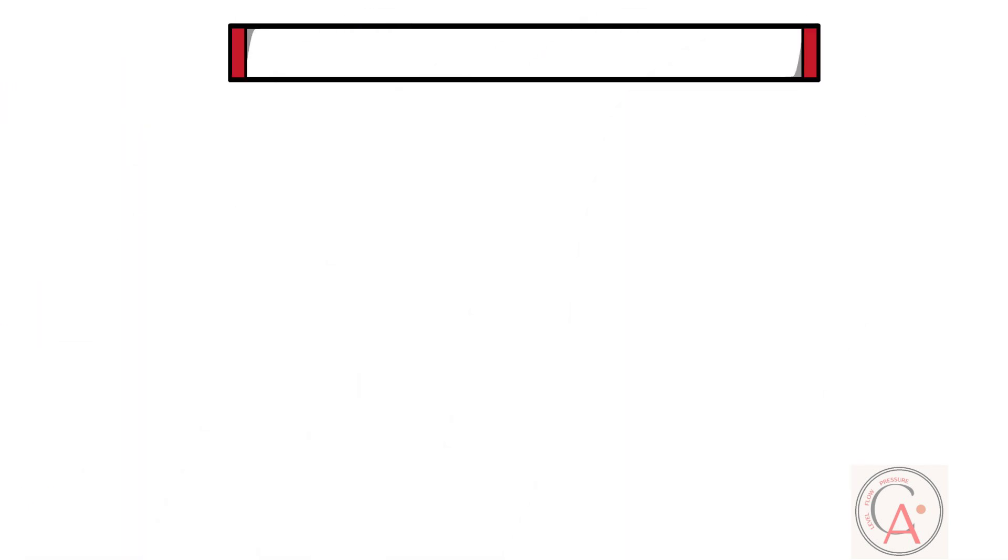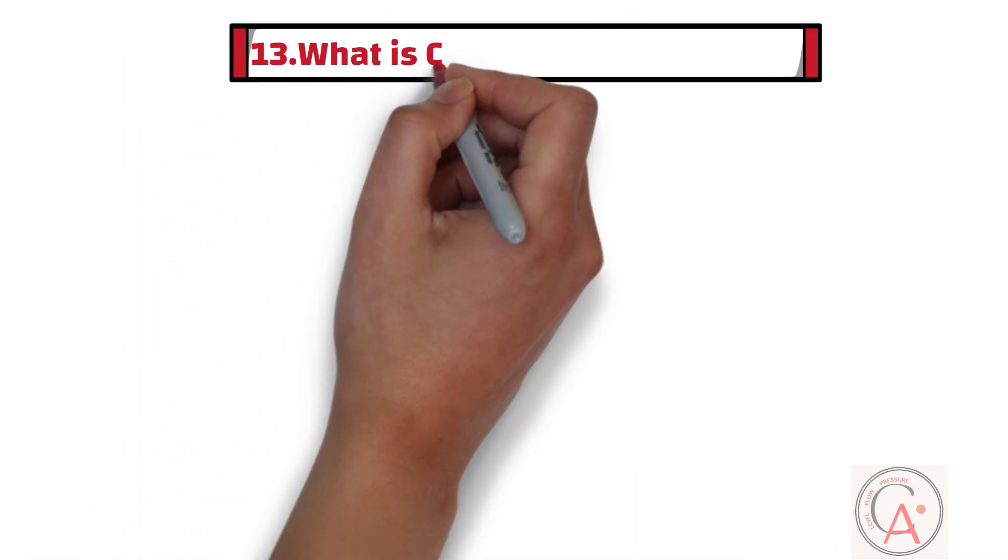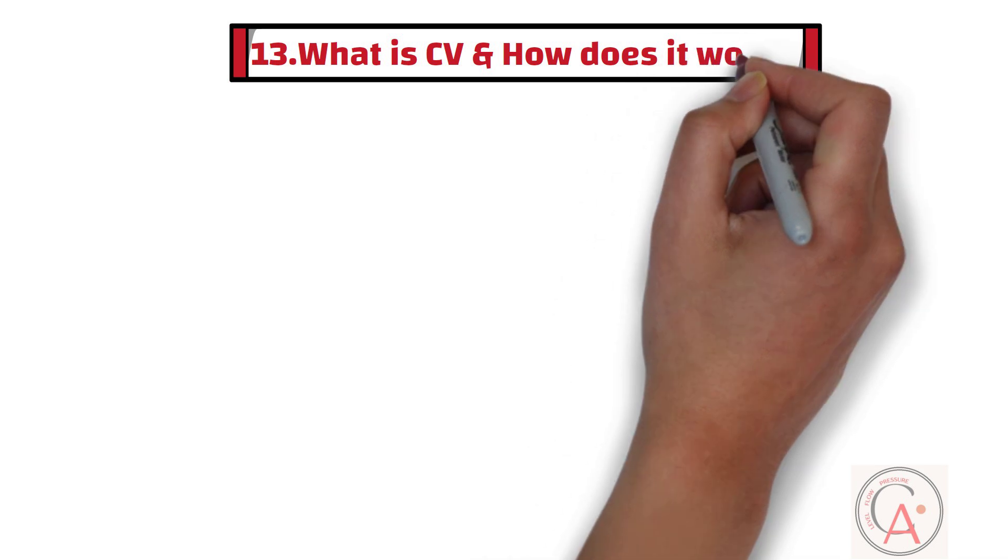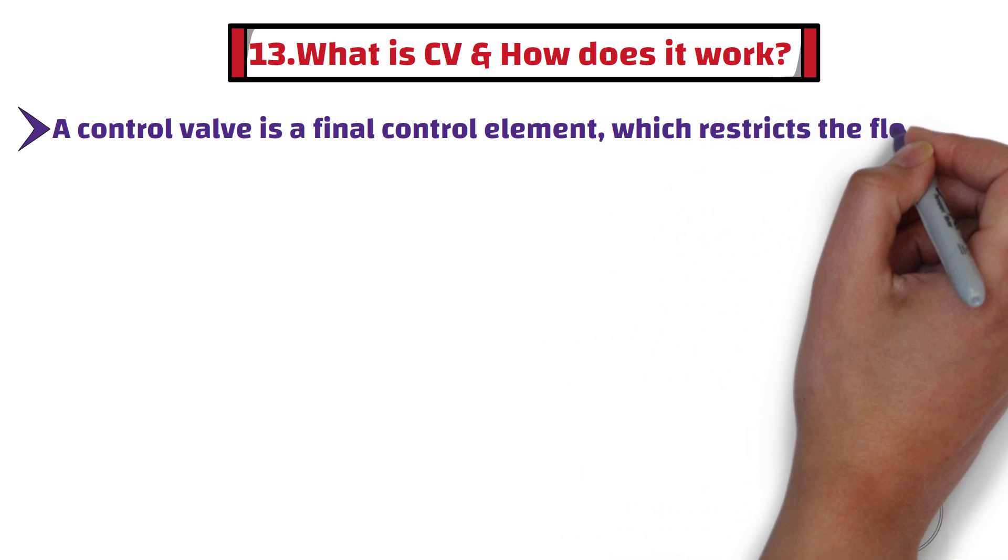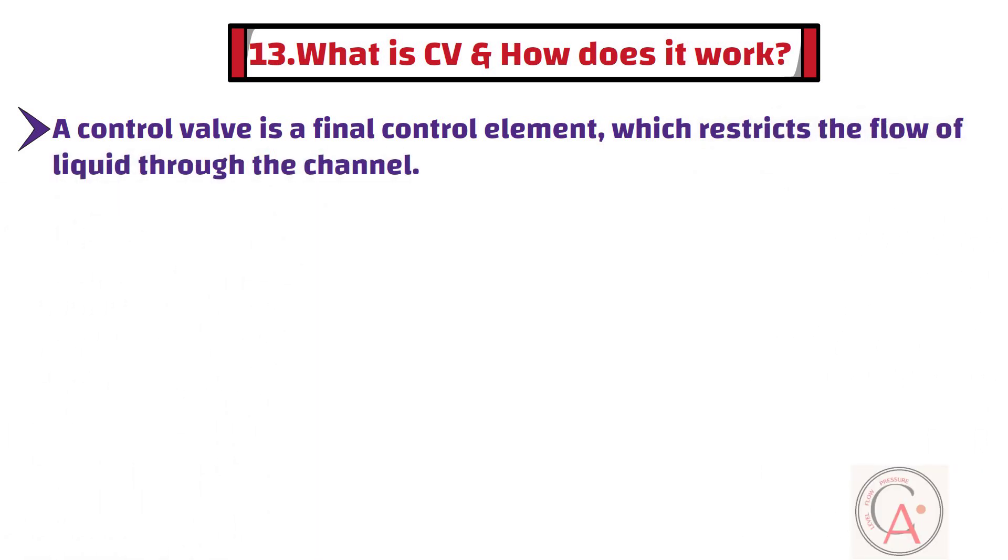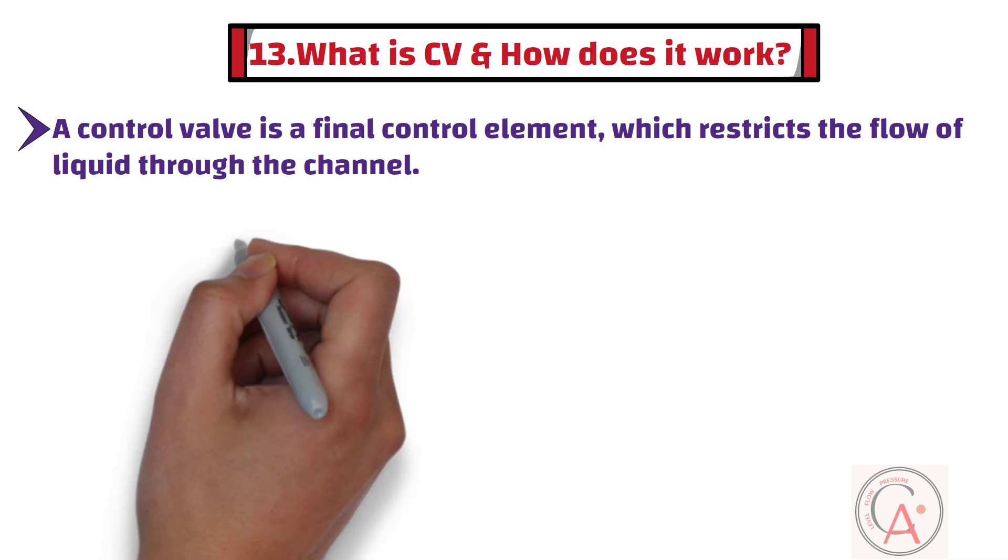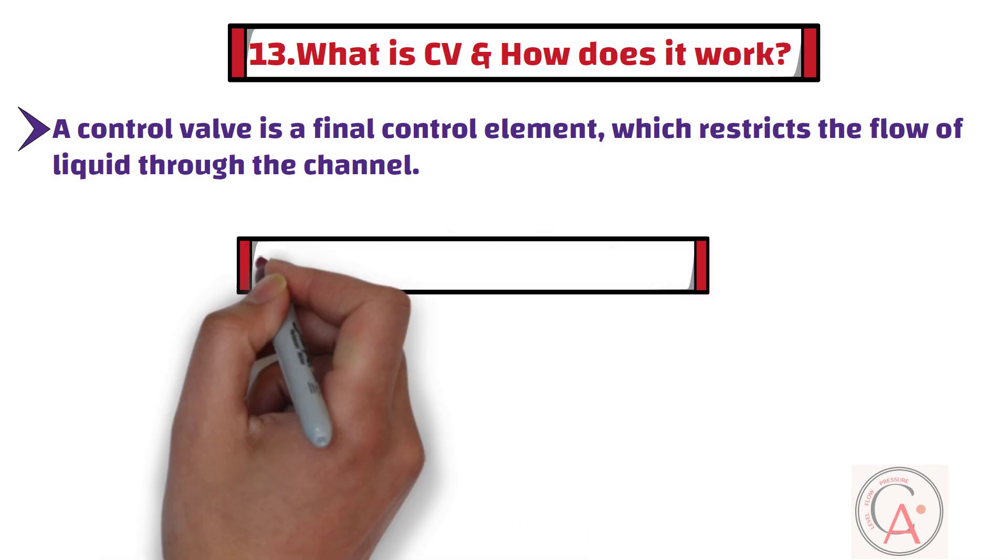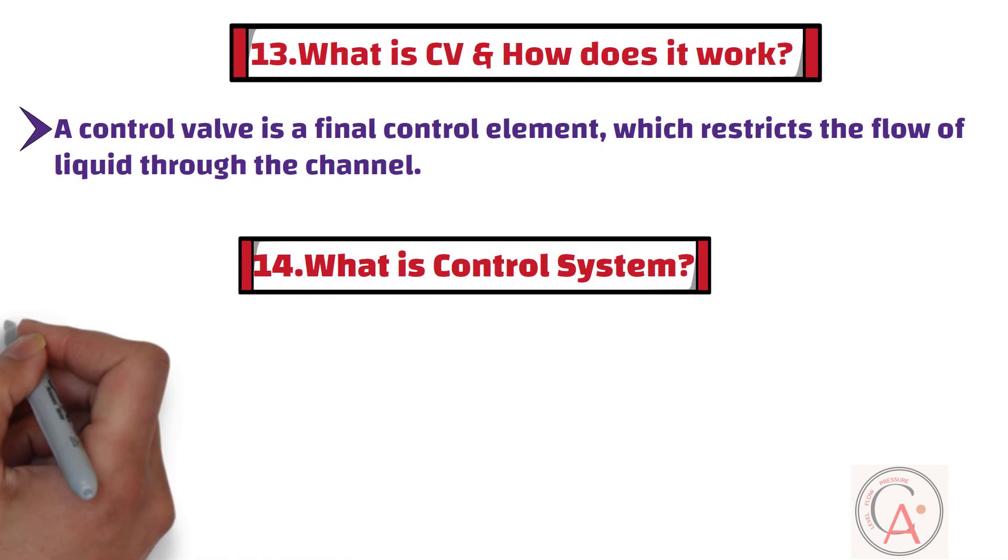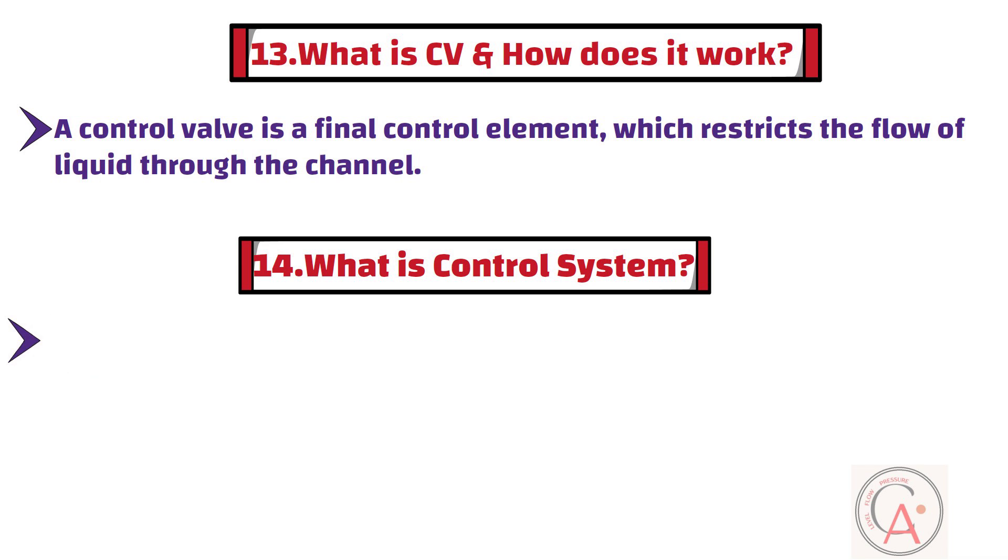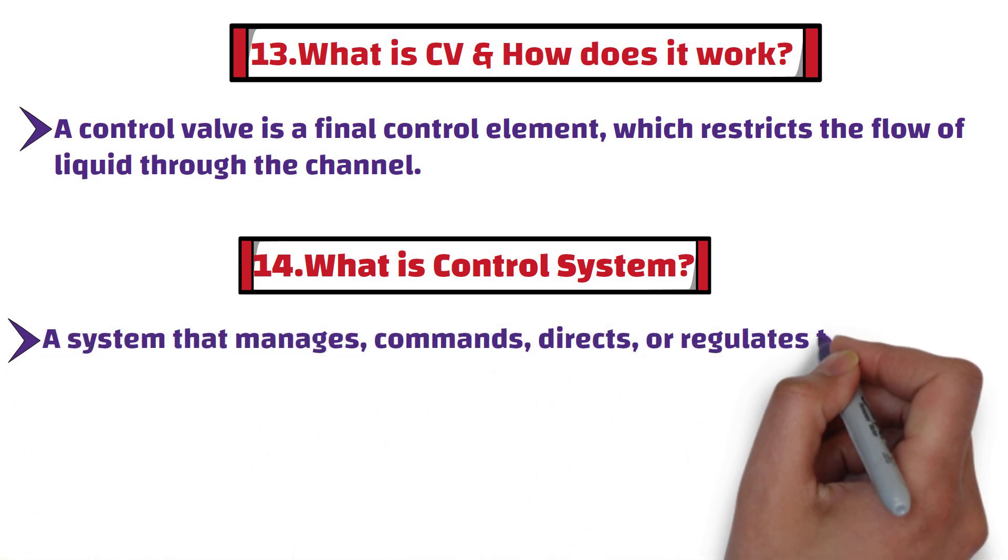The thirteenth question is, what is a control valve? A control valve is a final control element which restricts the flow of liquid through the channel. In other words, a control valve is a mechanical device used in various industrial processes to control the flow of a fluid, such as gas, liquid, or steam, through a system. The fourteenth number question is, what is a control system? A control system is a system that manages, commands, directs, or regulates the behavior of other devices or systems to achieve desired outcomes or results.